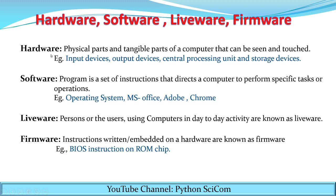Now let's see what is hardware. Hardware is the physical and tangible parts of computers that can be seen or touched. The parts of the computer that can be seen and touched will be called hardware. For example, the input devices, the output devices, CPU, and the storage devices — all these parts can be seen by you.